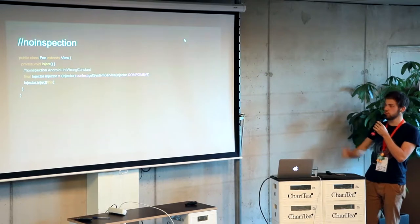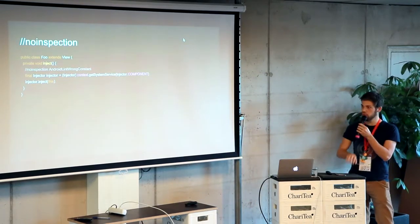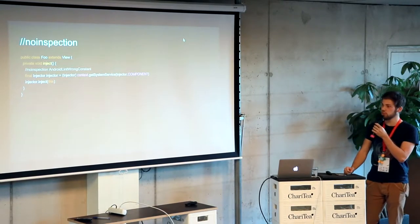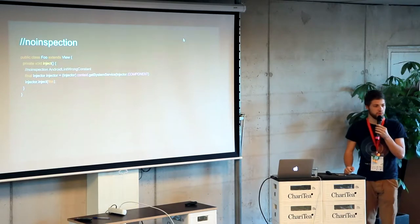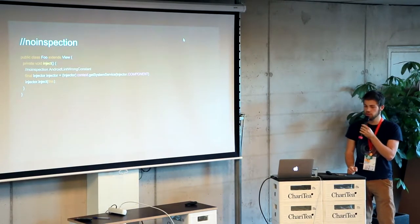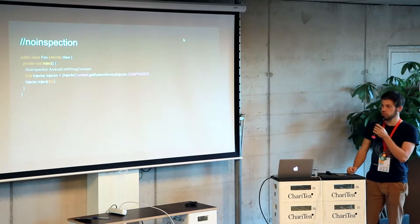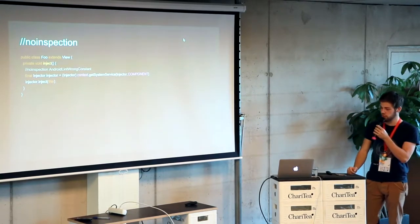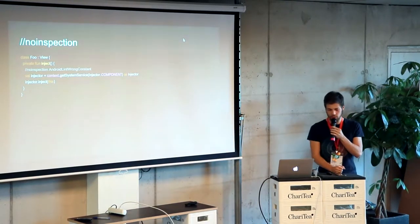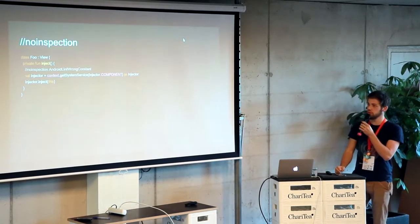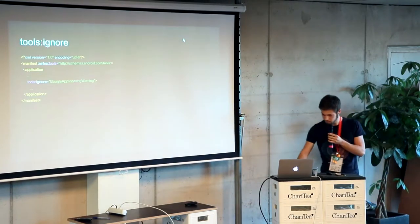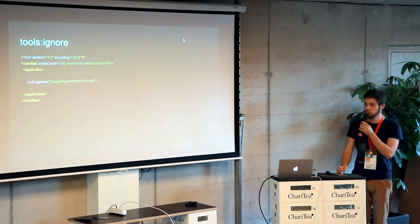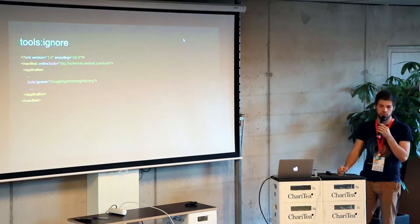There's also the common no-inspection comment you can use. For getSystemService, you can wire up your own services and overwrite it in your activity. There's a Lint check that checks that a constant is one of the well-defined ones, but you can actually use your own. If Lint yells at you, you can just say //noinspection and then android lint WrongConstant. And for XML files, there's the tools namespace, using tools:ignore with the rule ID.